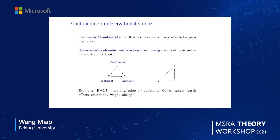Here I use two graphs to illustrate these two challenges. The first is for confounding. Suppose we are interested in the effect of X on Y, but there always exists some common cause of both X and Y called a confounder, which is not observed. For example, if we are interested in the effect of education on wage, then ability will be a confounder that is hard to measure and even hard to define. Ignoring the confounder will lead to biased or paradoxical inference, such as Simpson's paradox.